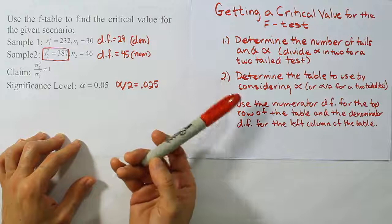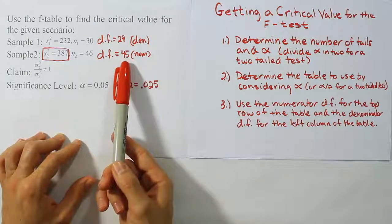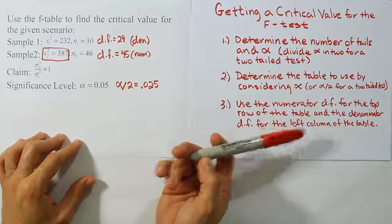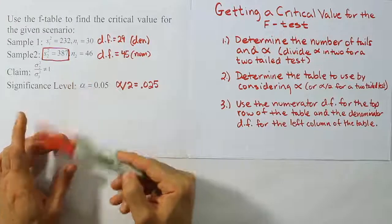Okay, now once we know we're going to that table, we're going to use the numerator degrees of freedom for the top row. So we're going to be looking up 45 in the top row. And we'll be looking up the denominator degrees of freedom in the left column. So we're going to look up this 29 in the left column of the table.